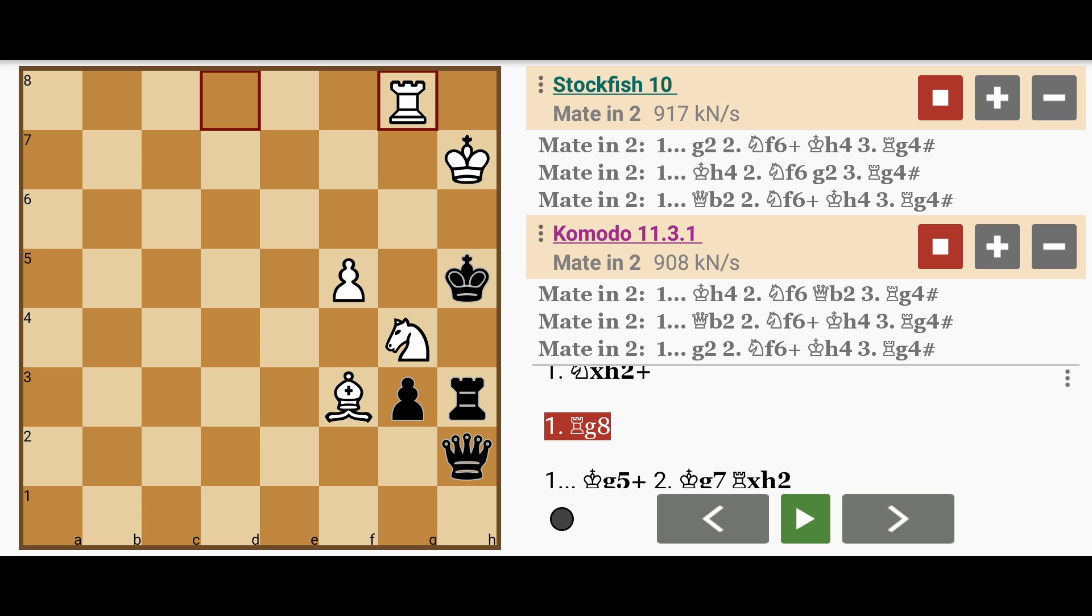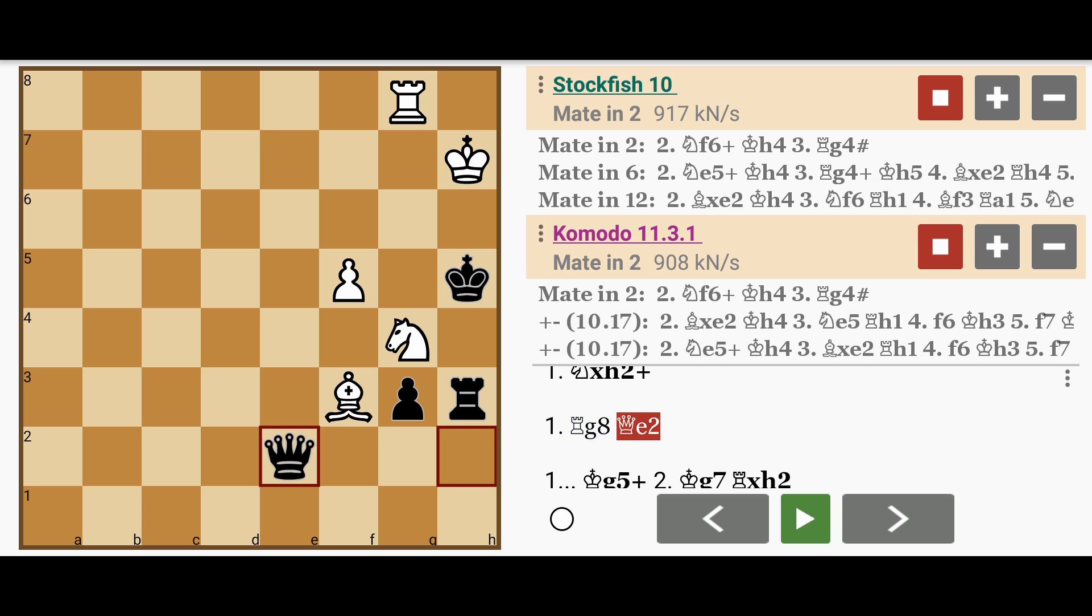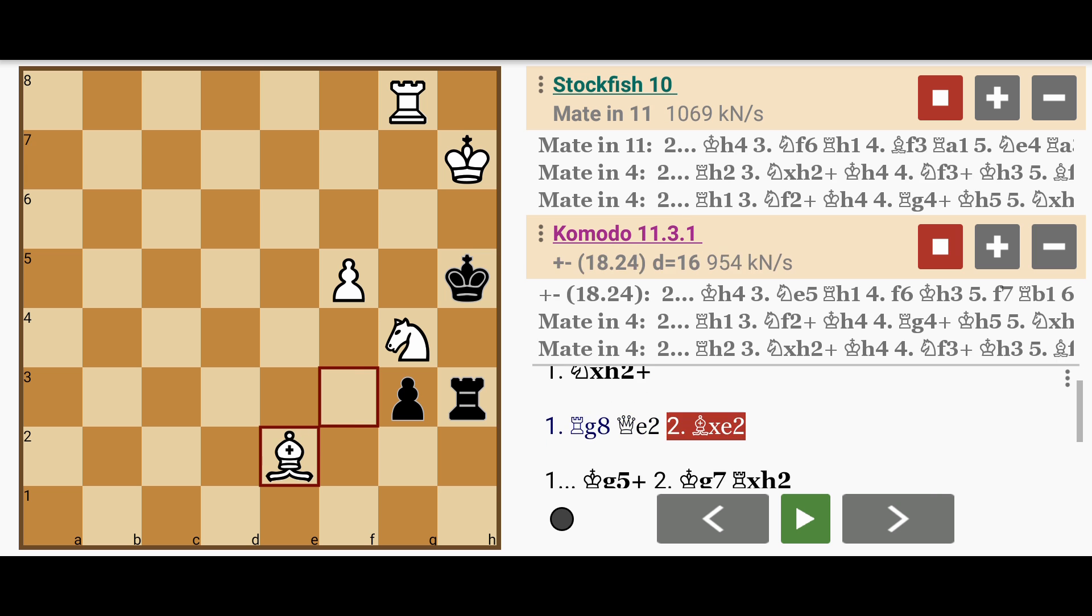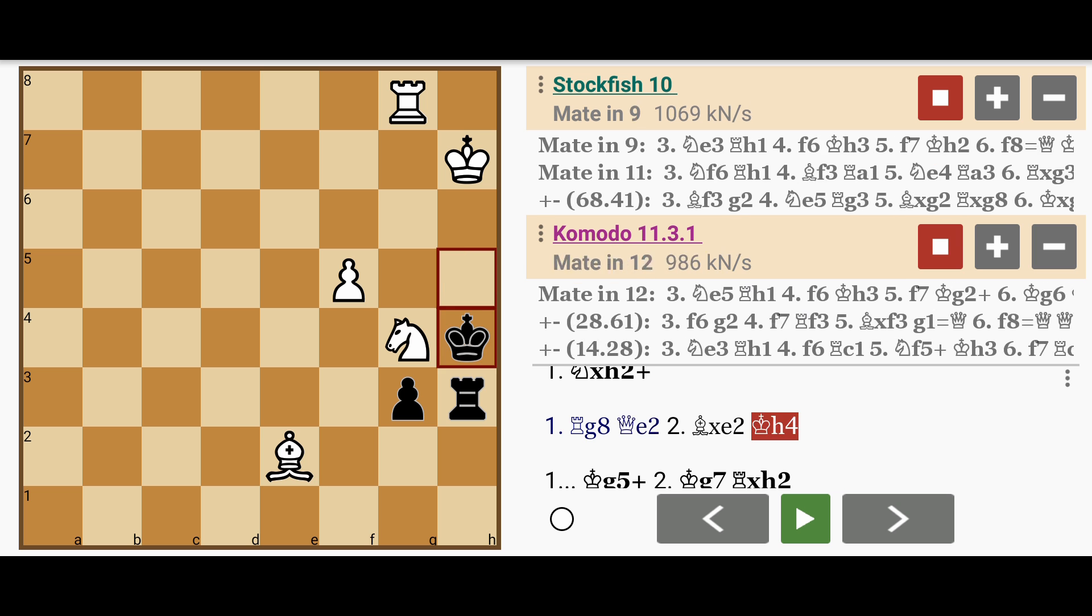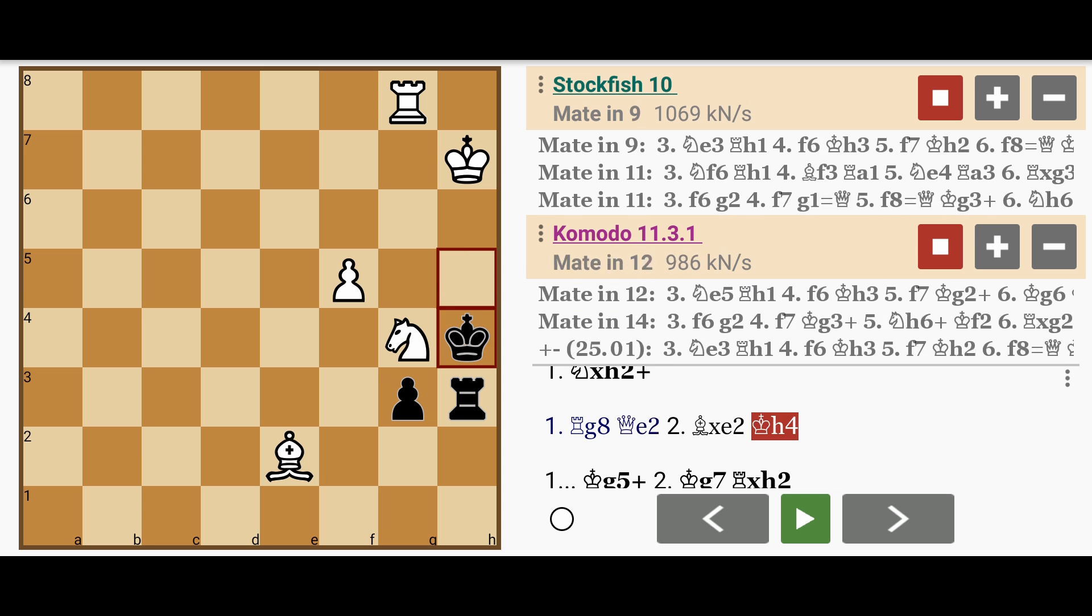Black might try to delay the mate by playing queen to e2. Now here if white captures the queen, it really delays the mate because black can try to escape with king to h4, and now white has to work a lot harder to checkmate the king.